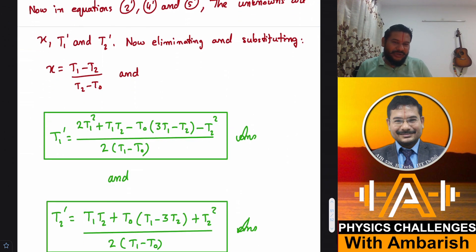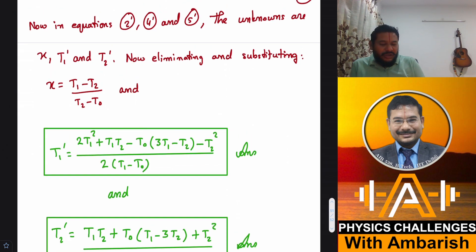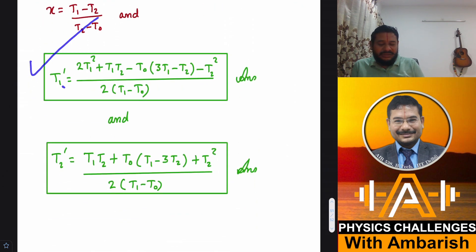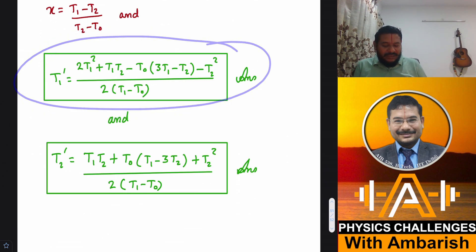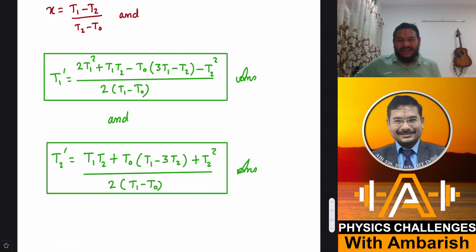I'm not showing all the dirty work here, but it's just bulk work. So now eliminating and substituting, you get X is equal to T1 minus T2 upon T2 minus T0. And T1 prime is this expression that you get, this longish expression. And T2 prime is this longish expression. So that's our final answer. And that was the challenge for today.